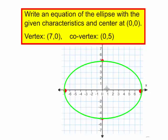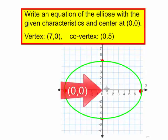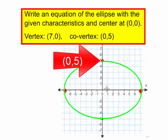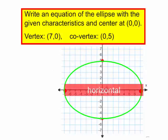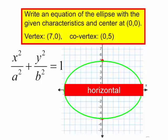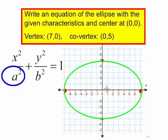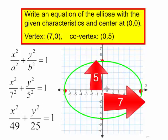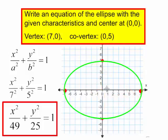So our ellipse should look something like this. The center is at (0,0). I have a vertex at (7,0) and a co-vertex at (0,5). This is a horizontal ellipse because my major axis is horizontal. So the a squared will be in the denominator of the x squared term. I should also notice that a equals 7 and b equals 5. So the equation of this ellipse will be x squared over 49 plus y squared over 25 equals 1.